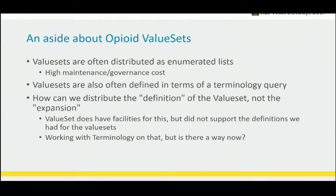An aside about opioid value sets: value sets are often distributed as enumerated lists, so there's a high maintenance and governance cost to just having this list of however many opioids. Ontologies like RxNorm provide a way to ask that question as an expression — give me all the medications that have this ingredient — as opposed to just maintaining a list that is the answer to that question. But right now we mostly distribute value sets in expansion form; we just share a list of codes, which is an easy practical solution rather than requiring a terminology server that can evaluate that expression.